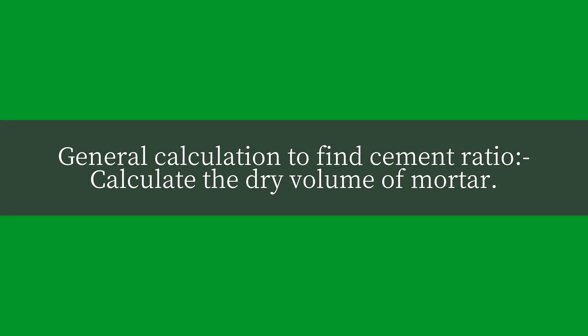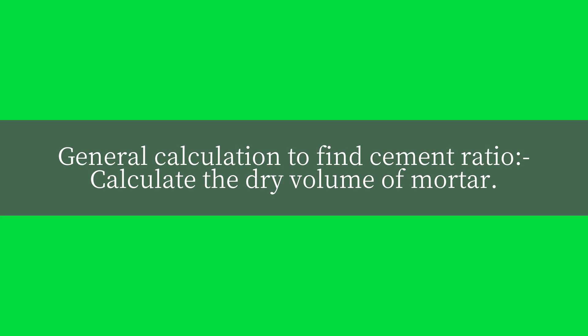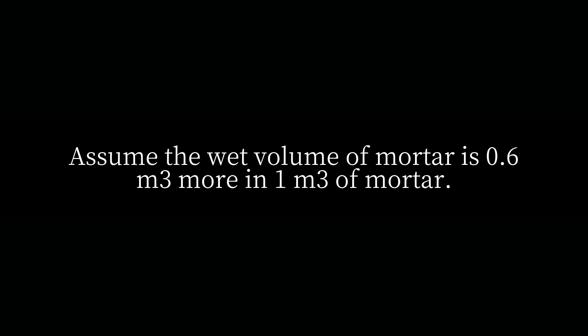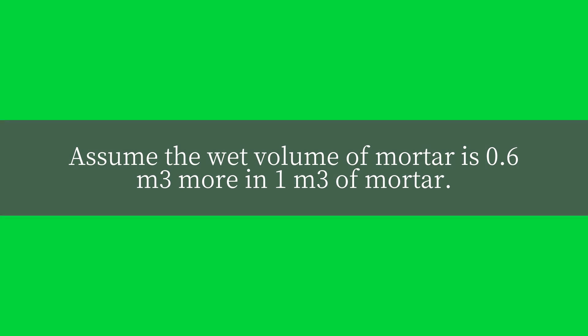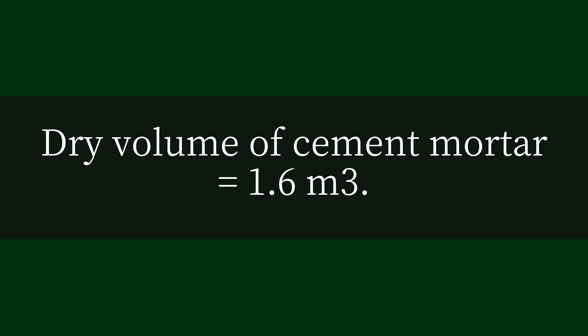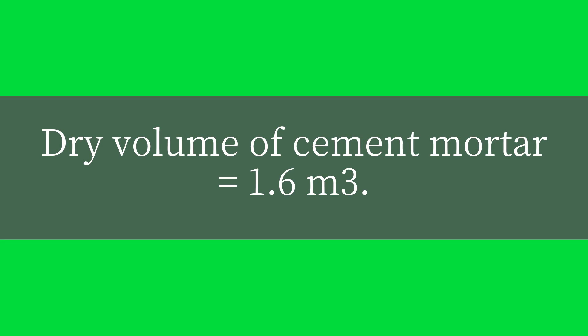For a general calculation, find the cement ratio by calculating the dry volume of mortar. Assuming the wet volume of mortar is 0.6 cubic meters more than one cubic meter, the dry volume of cement mortar equals 1.6 cubic meters.